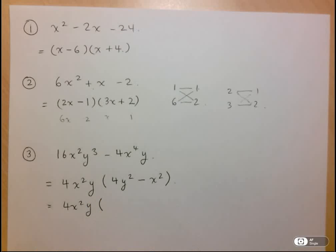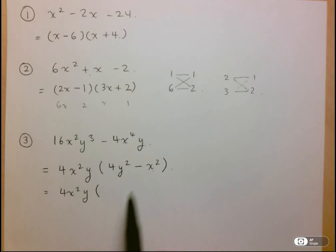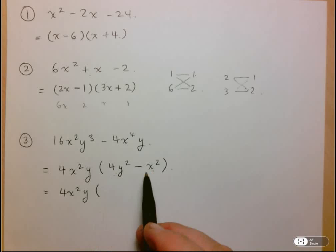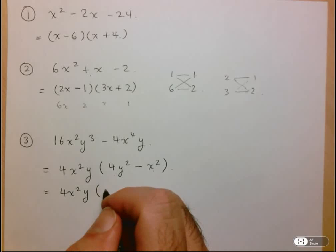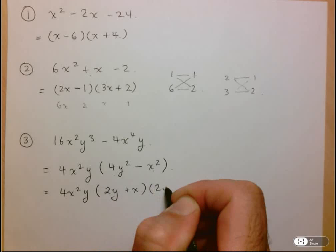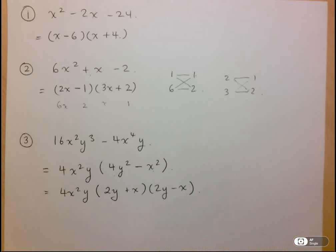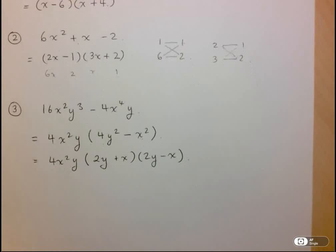And of course the way to factor difference of squares is the first root plus the second root times the first root minus the second root. So here we've got 2y + x times 2y - x. And this is the fully factored form. Let's move on to another example.